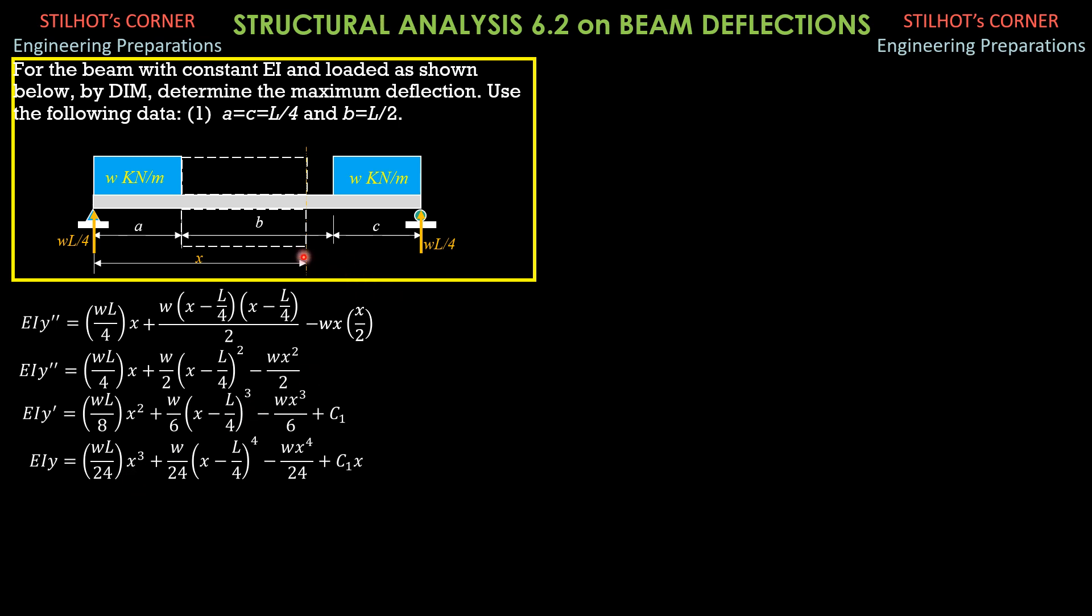So we now evaluate C sub 1 because by symmetry, the slope at the center, which is L over 2 when X is L over 2, Y prime or the slope is 0 of the tangent. I hope that you gained from that experience. That's it. So the slope here is 0. So X is L over 2, Y prime is 0.